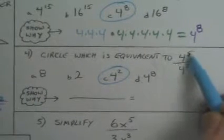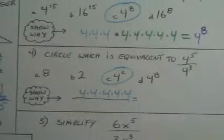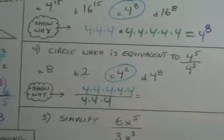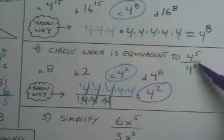Why is that? Well, I have five fours up on top. There's five of them. And on the bottom, I have three of them. And if I reduce, these reduce to one, this reduce to one, and what are you left with? Four squared. Four to the second power. That's why. Now, if you would have known the rules of exponents, you would just subtract the exponents. But if you did not, just go ahead and expand it out and then reduce.